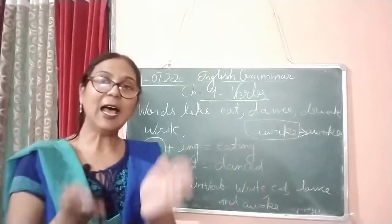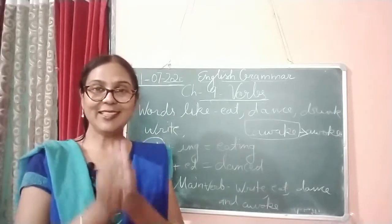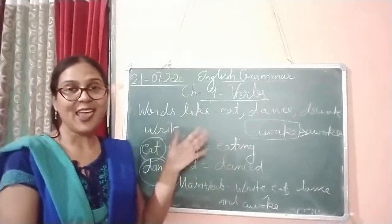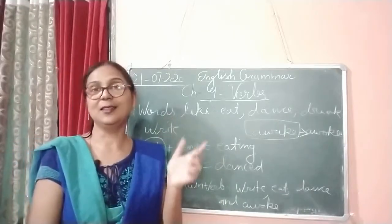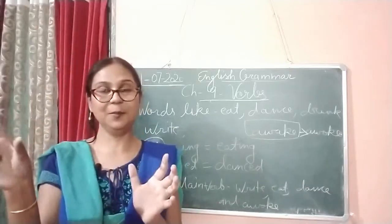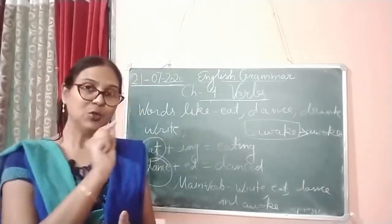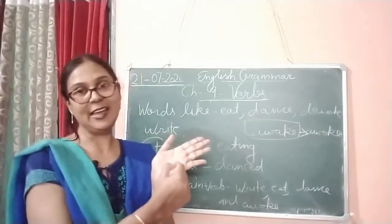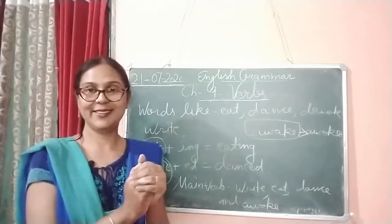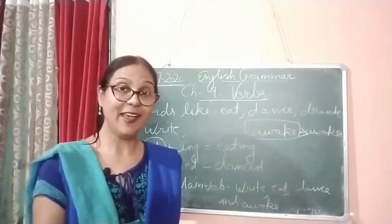Suppose I write 'Ram is dancing.' Here, 'dance' is the main verb and we have added '-ing' to make it present continuous tense. But the main verb is 'dance.' To make the present continuous tense, we add 'is.' So 'is' here is the helping verb or auxiliary verb. Now let's start studying auxiliary verbs and helping verbs.